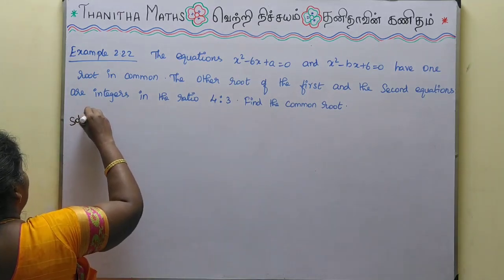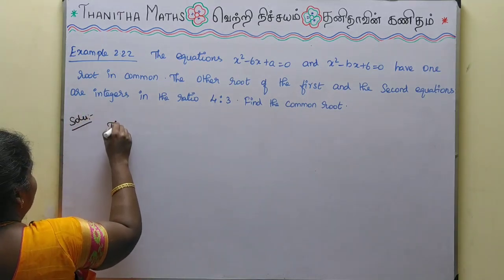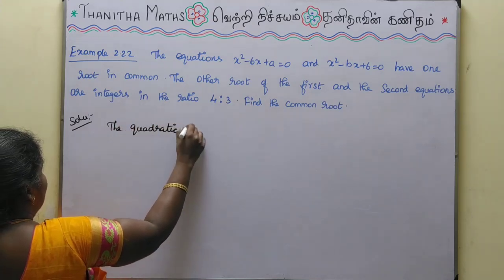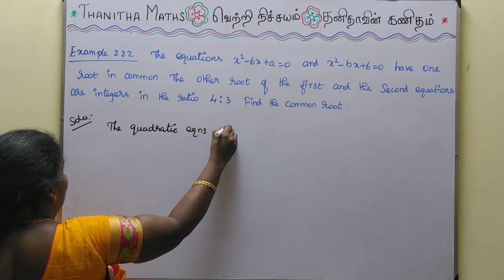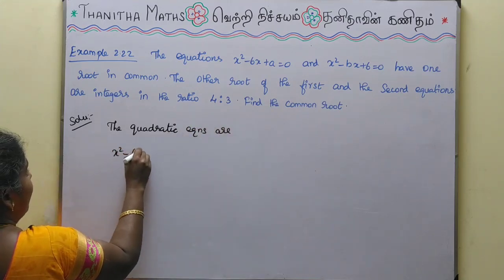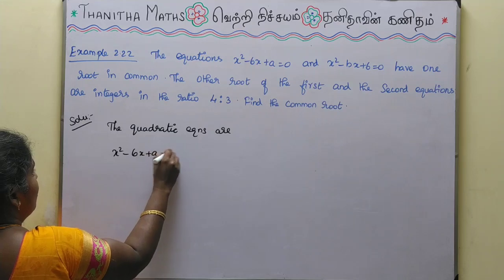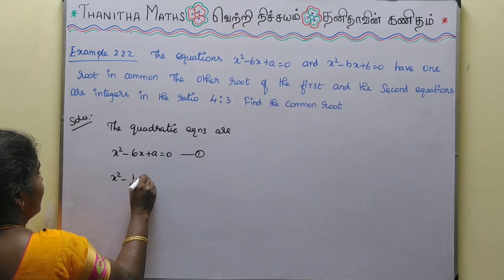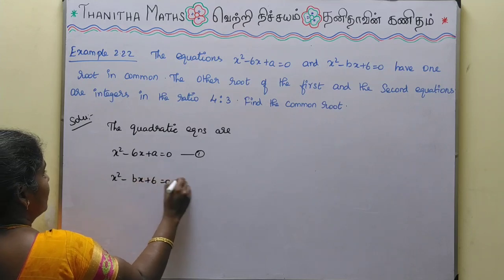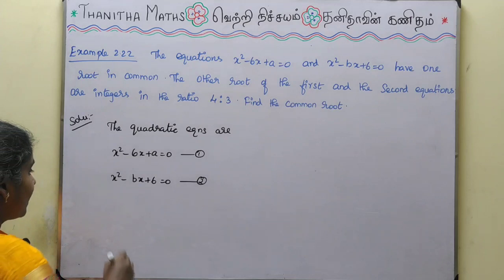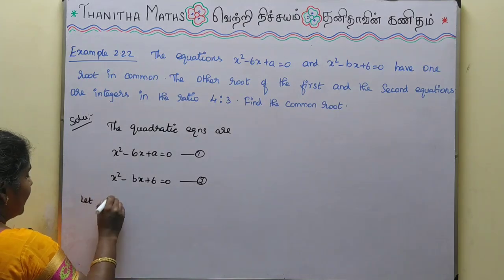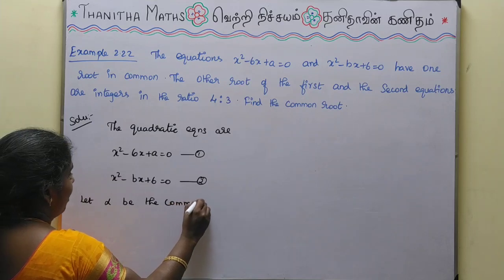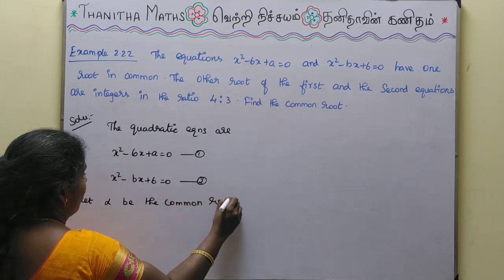Let's take the two quadratic equations. The first equation is x squared minus 6x plus a equals 0, and the second equation is x squared minus bx plus 6 equals 0. Let alpha be the common root.